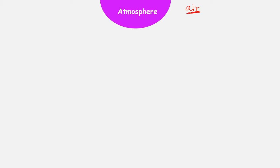Hello everyone. Today we are going to discuss what is atmosphere. When you think about atmosphere, what is the first thought which comes to your mind? I believe it is air. And when you think about air, two most prominent gases come to mind: first carbon dioxide and second oxygen. These two gases come to your mind when you think about air.